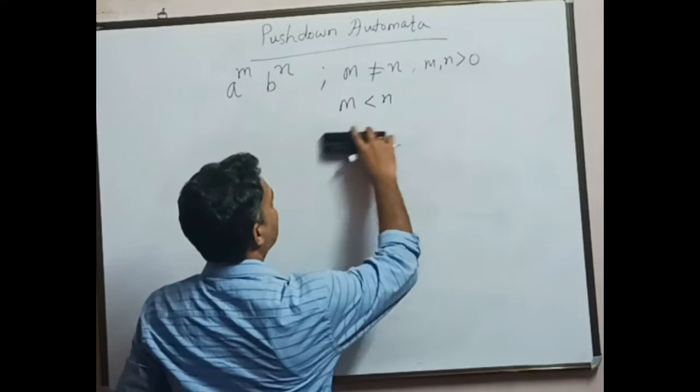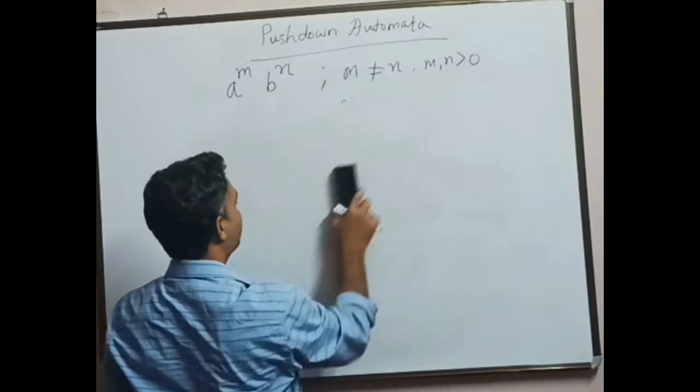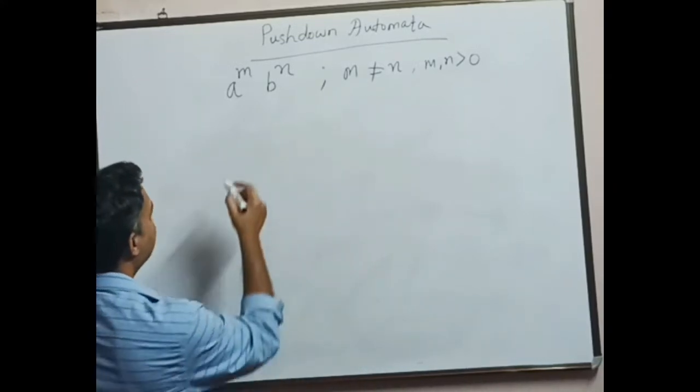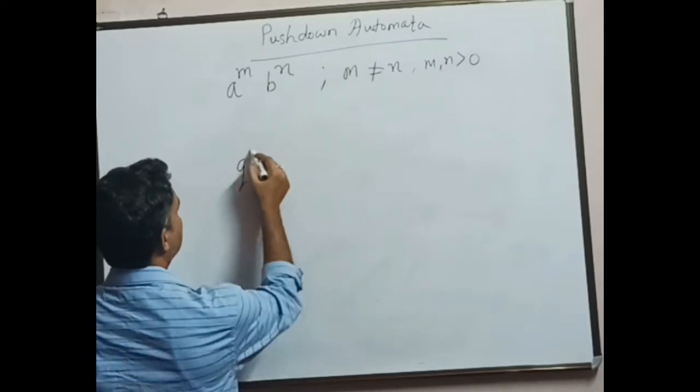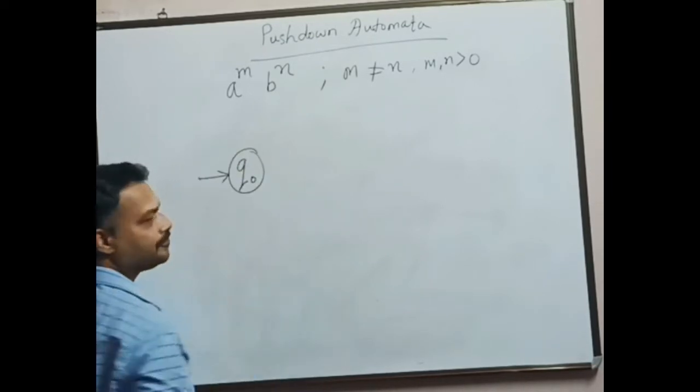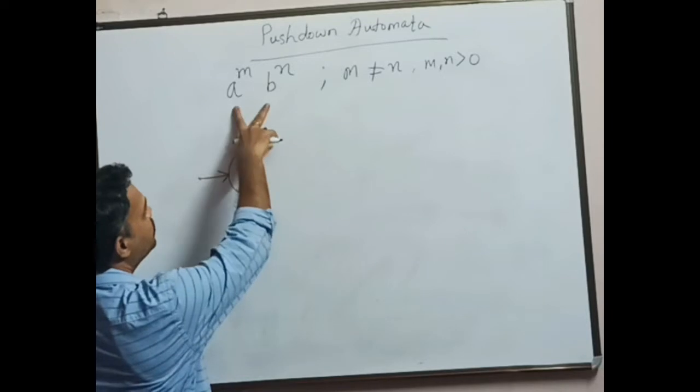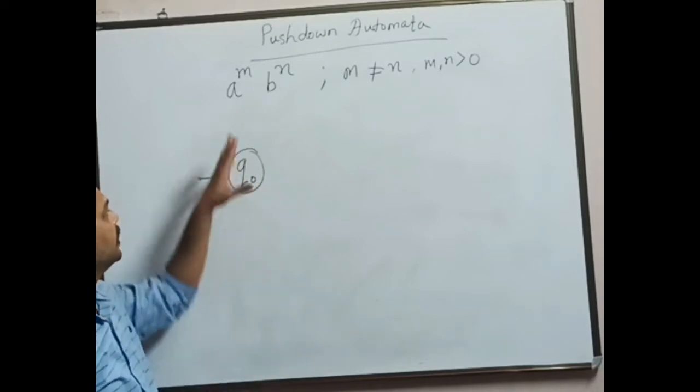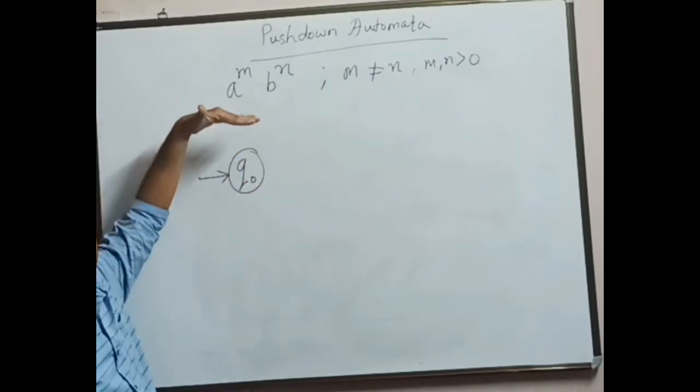Now let us see how we can design a PDA for this particular problem statement. Let us start with the start state, that is q naught. We can observe, as compared to the previous video, there was no pattern at all, but here there is a pattern given.